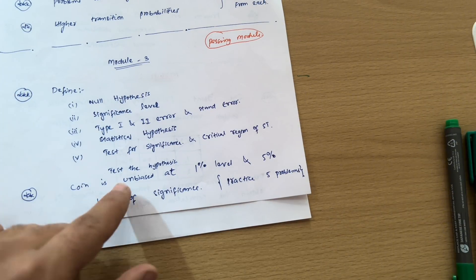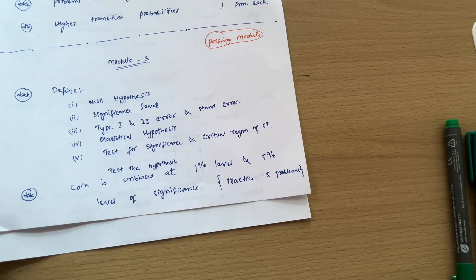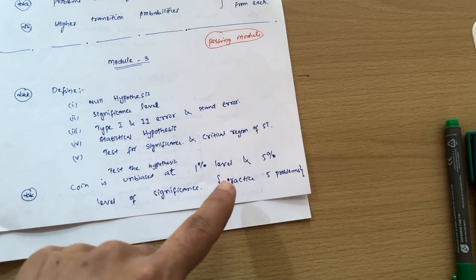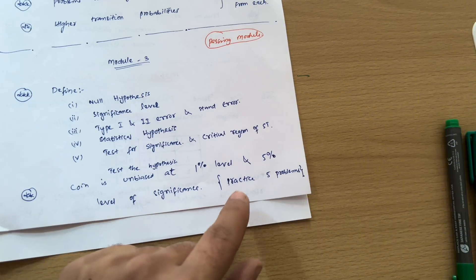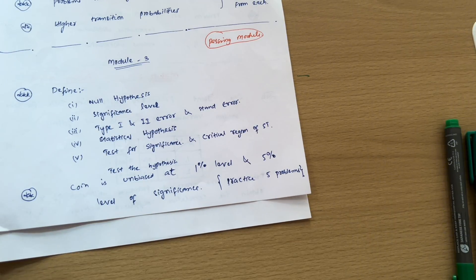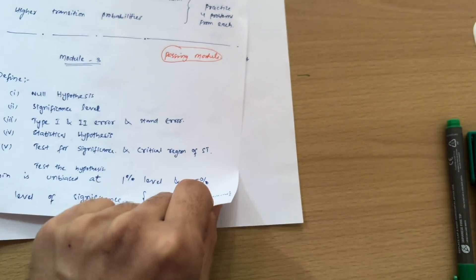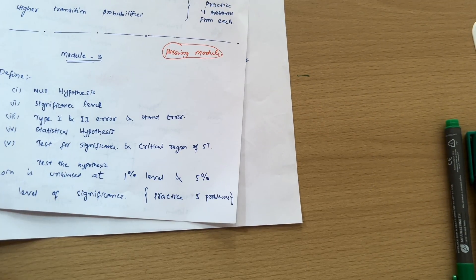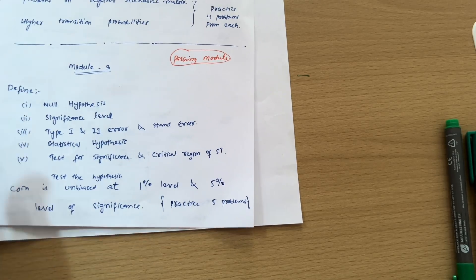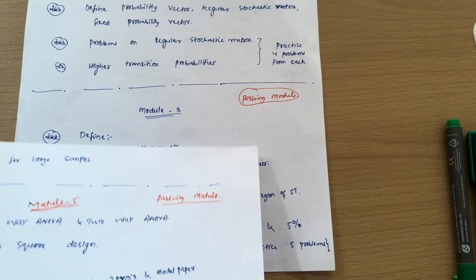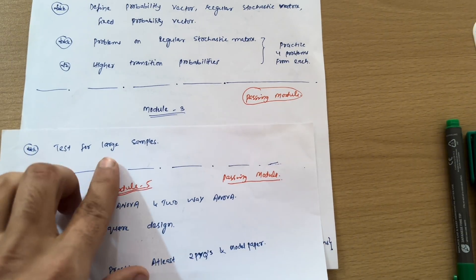The problematic part of Module 3 is testing the hypothesis — questions will be like 'test whether a coin is unbiased at 1% and 5% level of significance.' Practice at least five problems from previous year papers including model question papers to cover various varieties. In mathematics VTU examinations, repetition of questions is very rare, so keep that in mind. Concepts will be the same but data will be somehow different. This covers Module 3's theoretical portion and hypothesis testing problems.